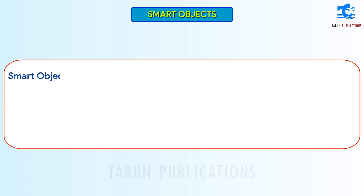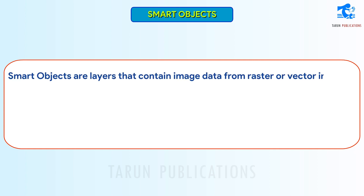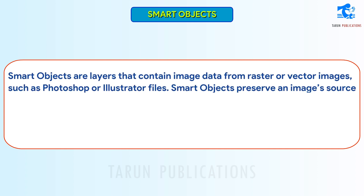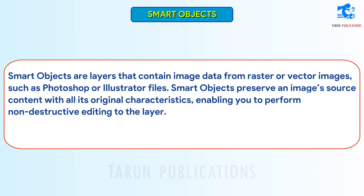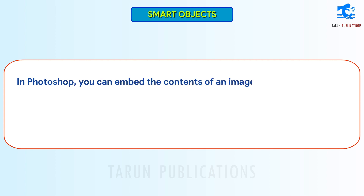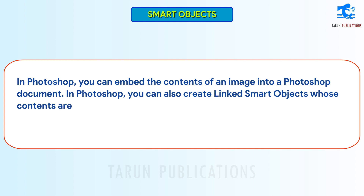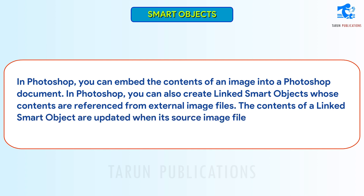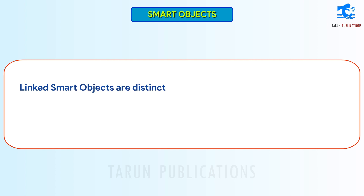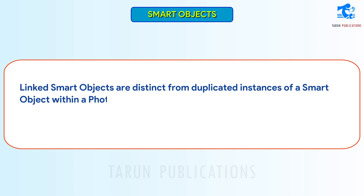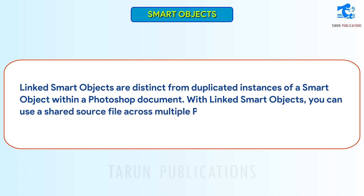Smart Objects are layers that contain image data from raster or vector images, such as Photoshop or Illustrator files. Smart Objects preserve an image's source content with all its original characteristics, enabling you to perform non-destructive editing to the layer. In Photoshop, you can embed the contents of an image into a Photoshop document. You can also create linked smart objects whose contents are referenced from external image files. The contents of a linked smart object are updated when its source image file changes. Linked smart objects are distinct from duplicated instances of a smart object within a Photoshop document. With linked smart objects, you can use a shared source file across multiple Photoshop documents.